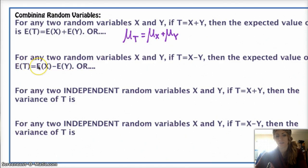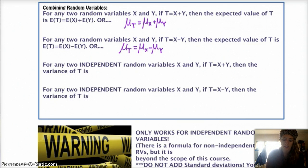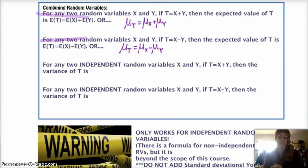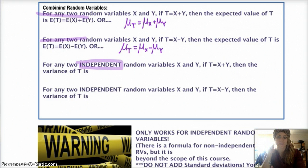The expected value of the new distribution is the expected value of the first minus the expected value of the second. If you want to combine variances or standard deviations, things get a little more complicated. The first two rules are pretty self-explanatory. But if you're trying to find the combined standard deviations, a couple things you need to know. One: you can't combine standard deviations — you can only combine variances. Two: you can only do this if the events are independent.